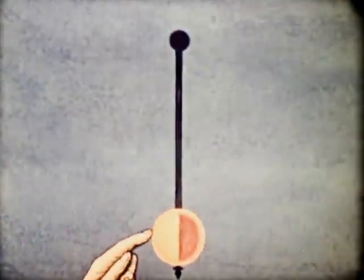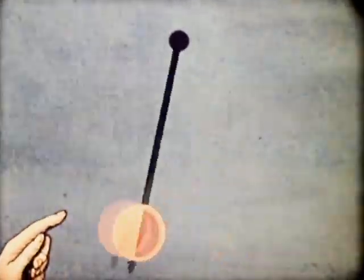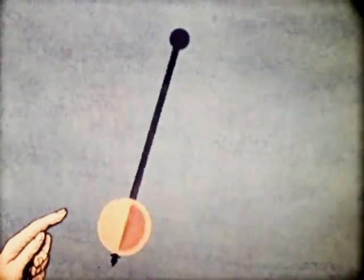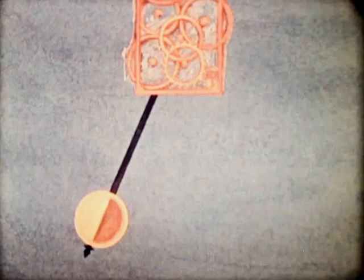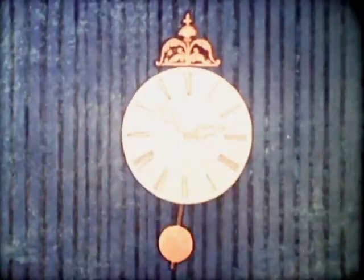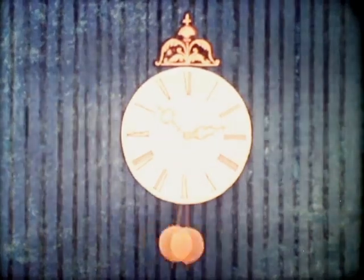If the pendulum is pushed regularly, it continues to swing, but the same fixed frequency is maintained. A shorter pendulum, however, moves faster. In this example, the frequency is two cycles per second.